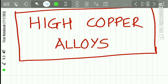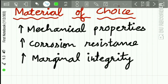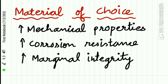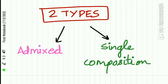Now let us study the high copper alloys. These high copper alloys are the material of choice because they increase the mechanical properties, have more corrosion resistance, and have better marginal integrity. There are two types of high copper alloys: the admixed one and the single composition one.